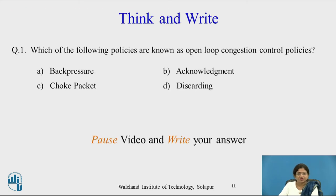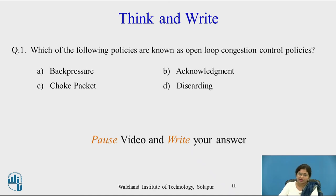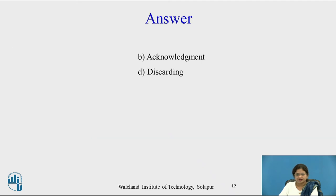Pause the video and write down the answer: which of the following policies are known as open loop congestion control policies — back pressure, acknowledgement, choke packet, or discarding policy? The answer: the acknowledgement policy and the discarding policy are the open loop congestion control policies.